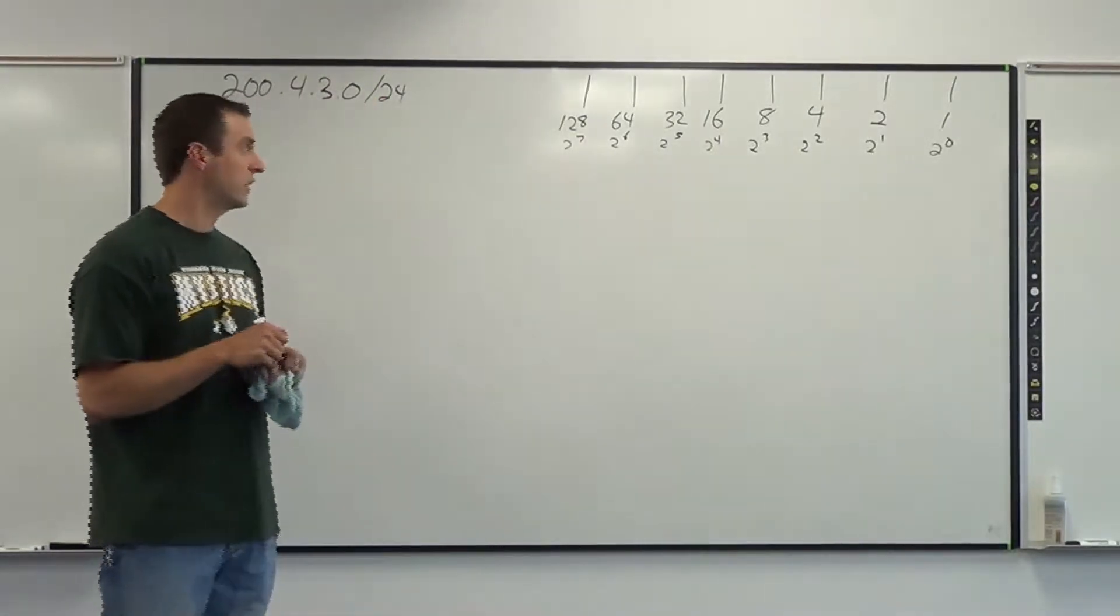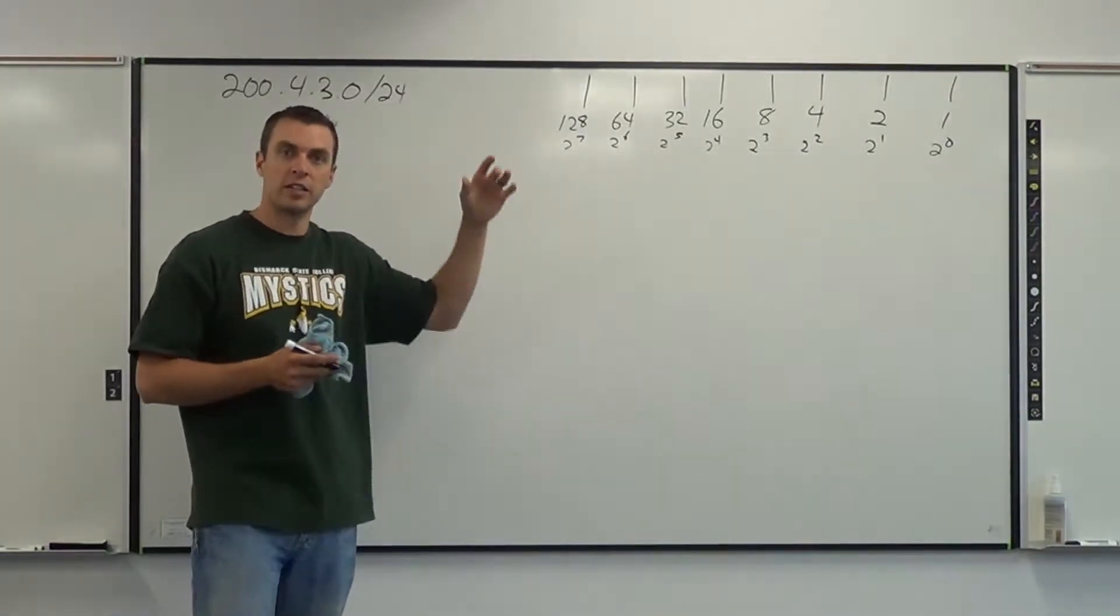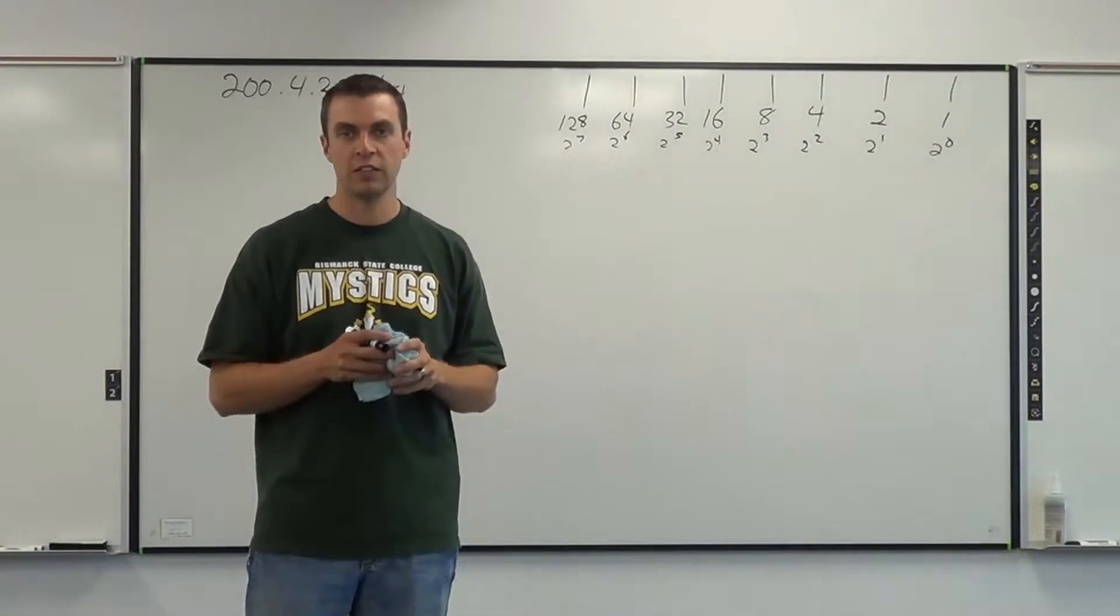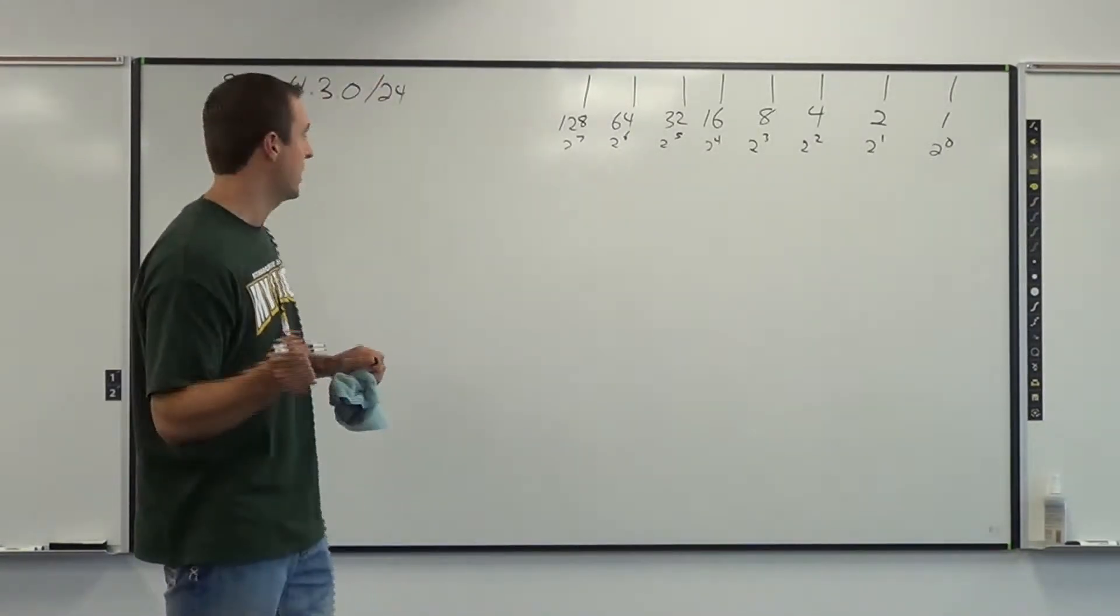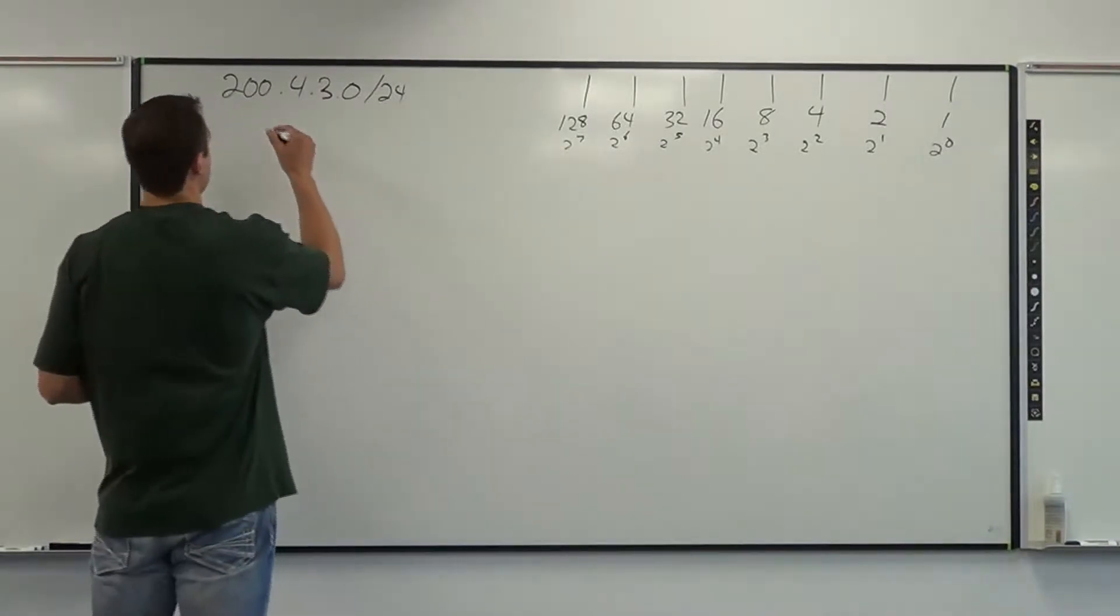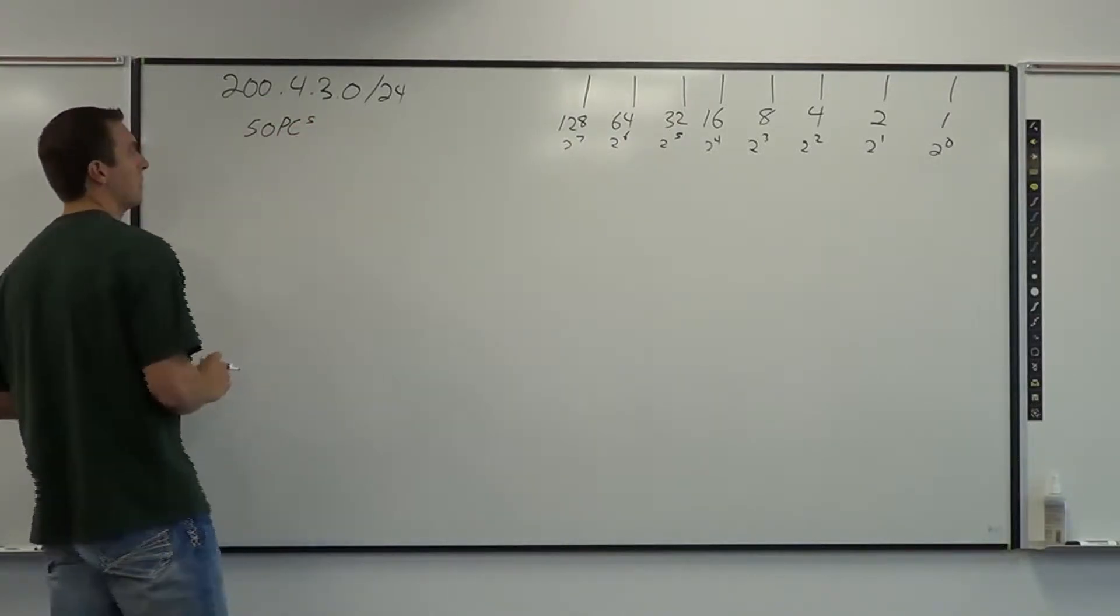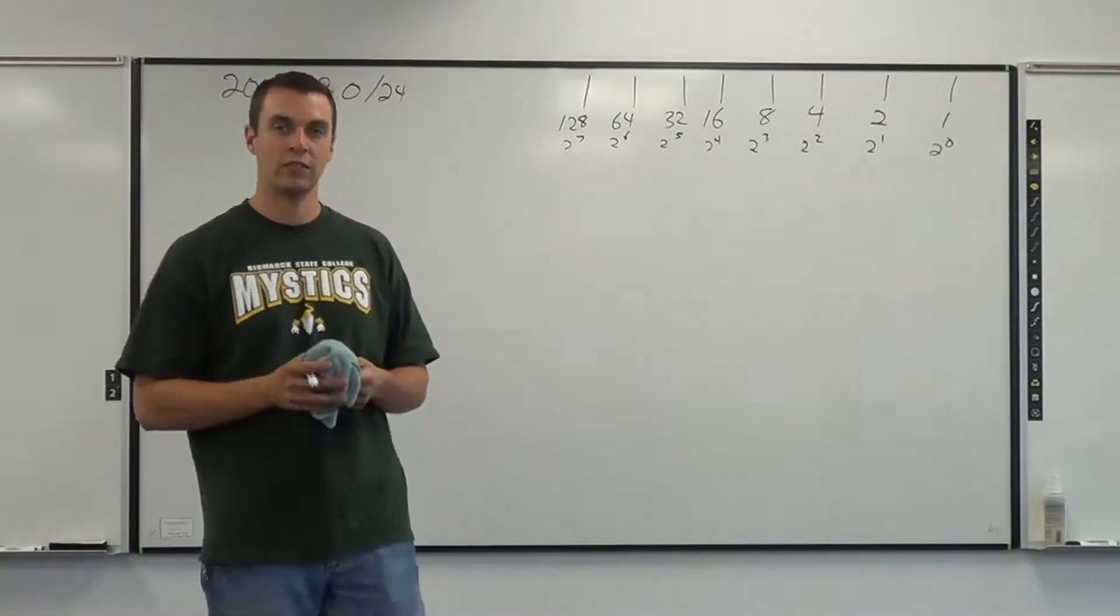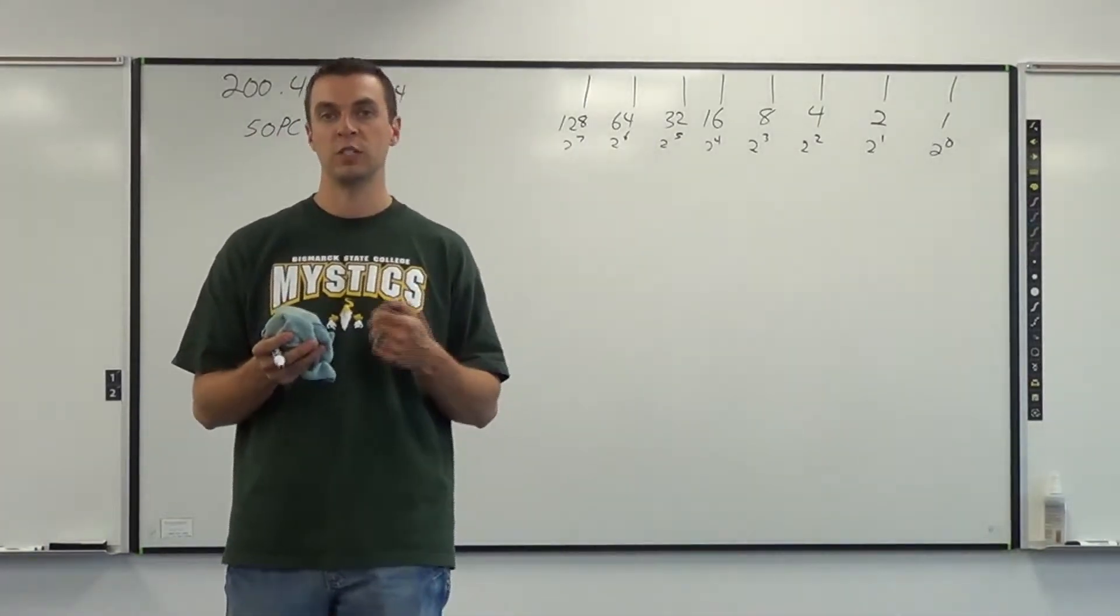So your first step is to draw out your chart, and I already have that up on the board. Your next step is to figure out your host requirement, and sometimes I'll just give that to you or sometimes you'll have to add up the number of PCs, but I'll also pretend here that we have 50 PCs as our requirement. So it does not matter to us how many locations we get out of this. We just know that each location that we have, we want to have at least 50 PCs.